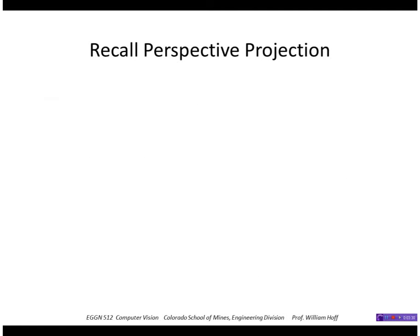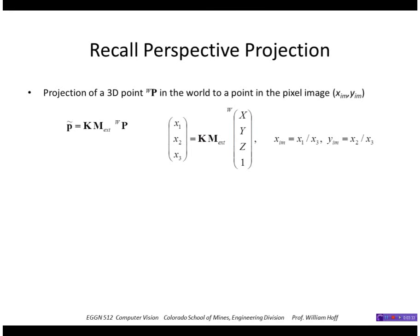Just to review perspective projection: we can project a 3D point in world coordinates to a point in the image by multiplying by an extrinsic parameter matrix times the intrinsic parameter matrix. This is a homogeneous image point, so we have to divide by the third element of the result.